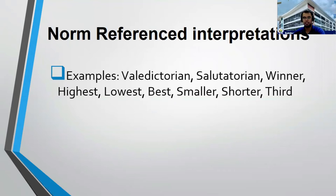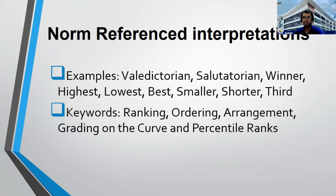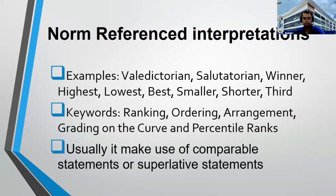These are the possible keywords: ranking, ordering, arrangement, grading on the curve, and percentile ranks — these are always associated with norm reference interpretations. It usually makes use of comparable or superlative degrees such as good, better, best, more, and most. If there is comparison between you and others who take the same test, that is norm reference interpretation. You cannot compare if they are taking different exams.